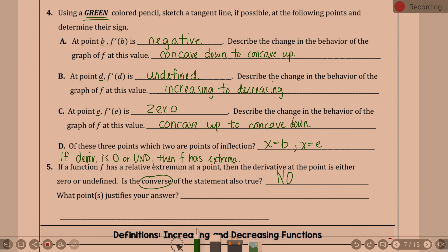What points justify your answer? E is the one I have. I have at x equal e, and that's because the derivative of e is zero, but point e is not an extrema. Not an extrema of f.